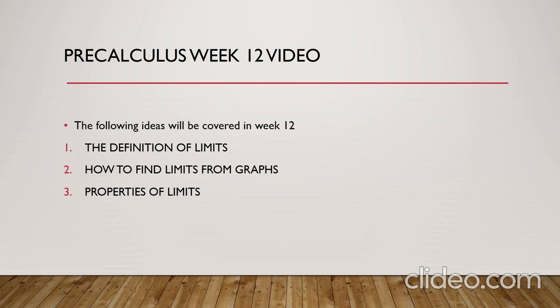After that, we will start covering finding the limits using different techniques, starting with graphs. In order to find the limit from the graph, we have to check the right-hand side and the left-hand side of the function at that point. If the limit from the right-hand side is equal to the limit from the left-hand side, we say that the limit exists and it's equal to that value. Otherwise, the limit does not exist.